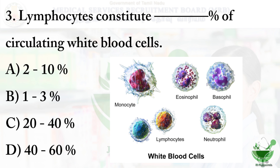Question number three: lymphocytes constitute what percentage of circulating white blood cells? Option A: 2 to 10%, option B: 1 to 3%, option C: 20 to 40%, option D: 40 to 60%. The correct option is option C, 20 to 40 percentage.